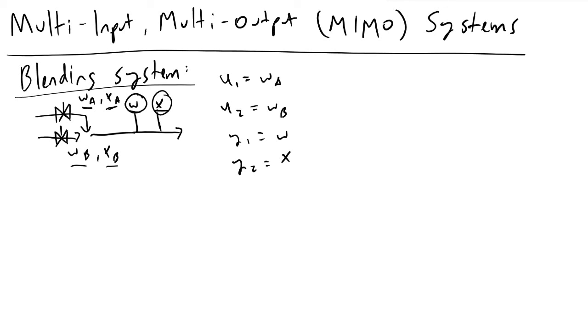Now that we've defined our inputs and outputs, this is a bit different from the SISO single input single output systems we've dealt with before, in that a change in one input affects all outputs.